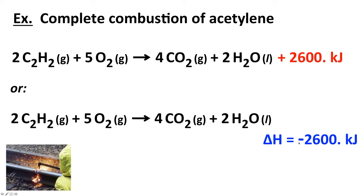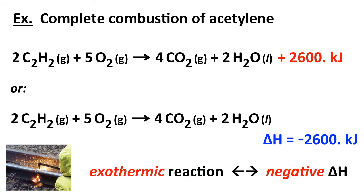The negative sign means that energy is given off when the reaction occurs — 2,600 kilojoules of energy are given off. That's the delta H for this reaction when two moles of acetylene reacts with five moles of oxygen to make four moles of carbon dioxide and two moles of water. Because this reaction is exothermic, it has a negative delta H.